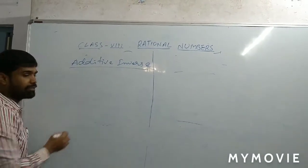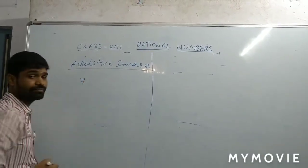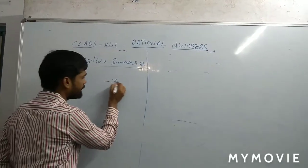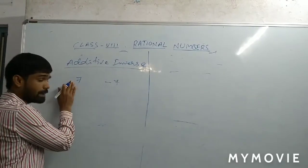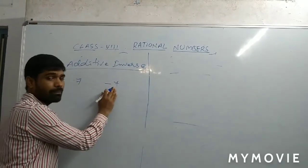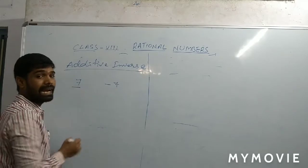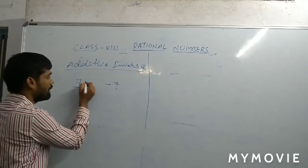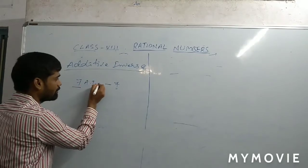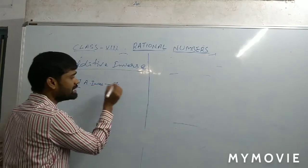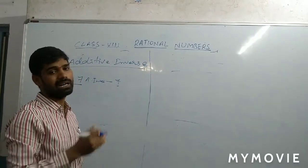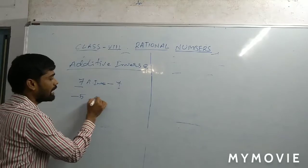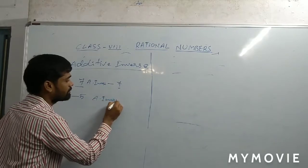For example, a number we have taken as 7 — it is plus 7. So, what about minus 7? Here plus and here minus — so the additive inverse of 7 is minus 7. The additive inverse of minus 5 is...